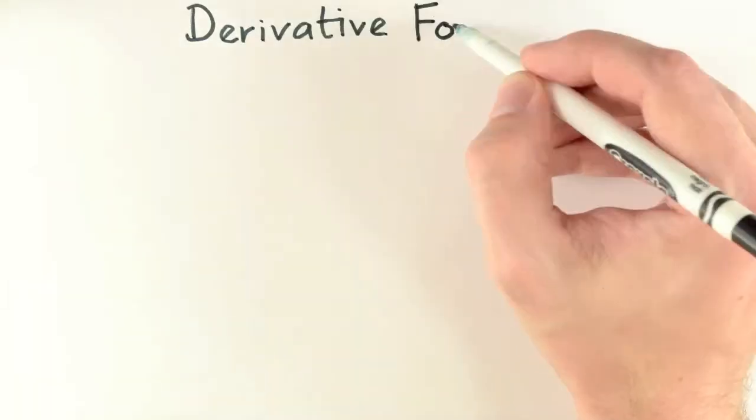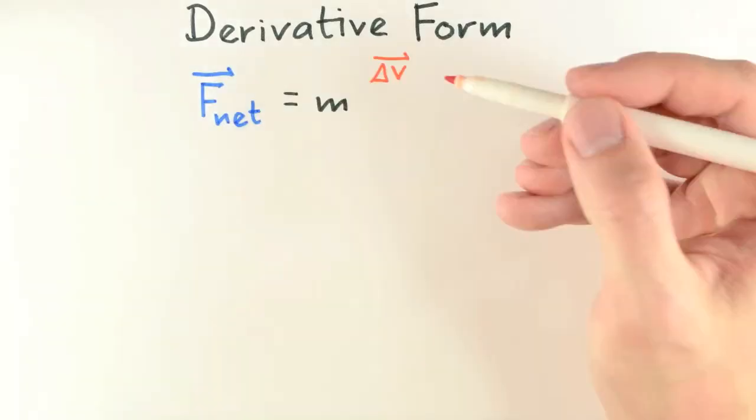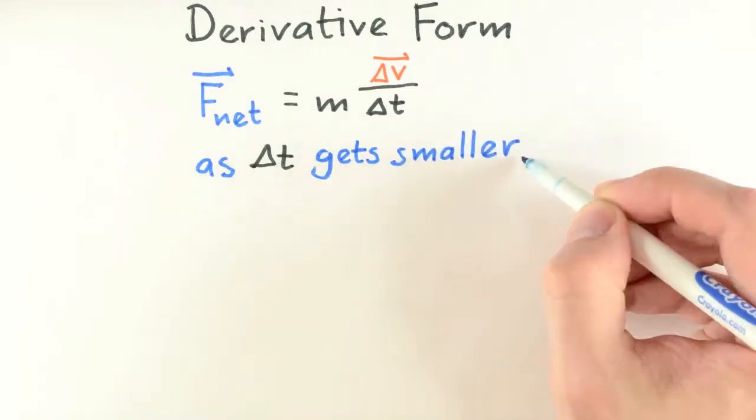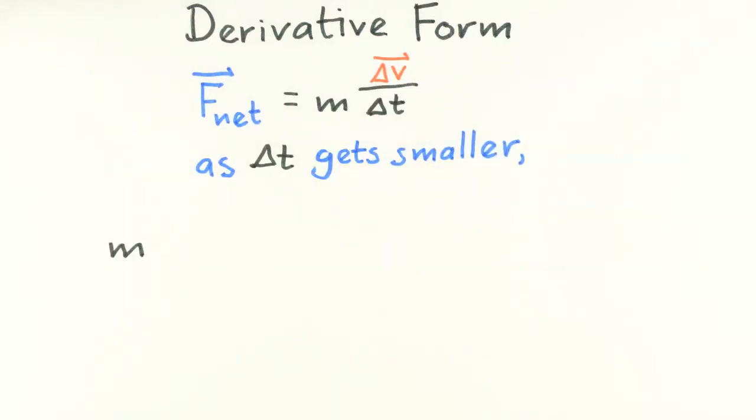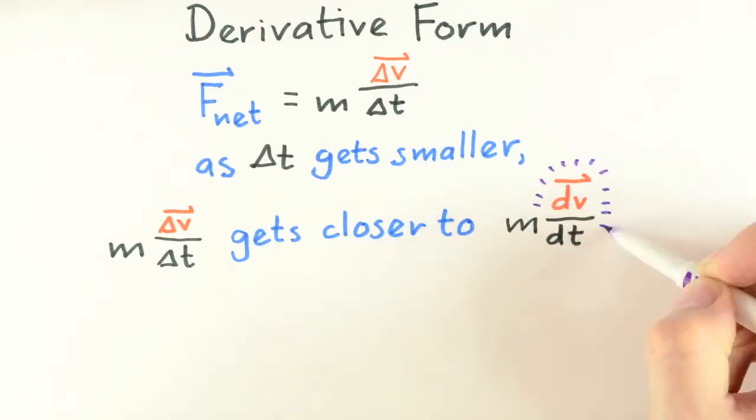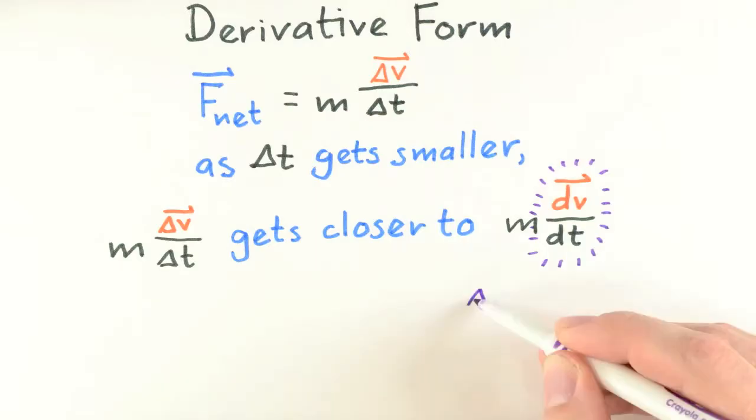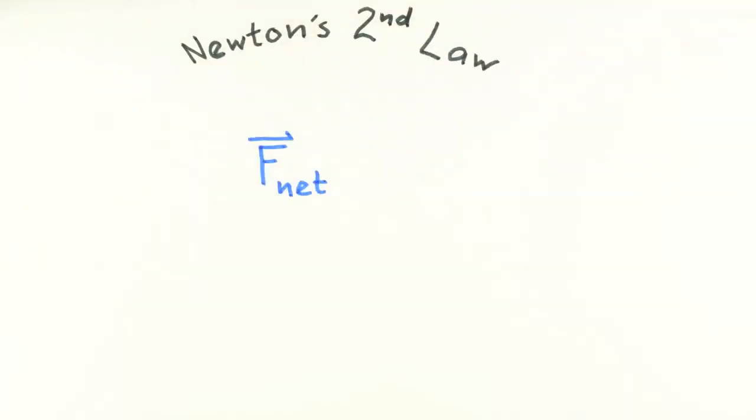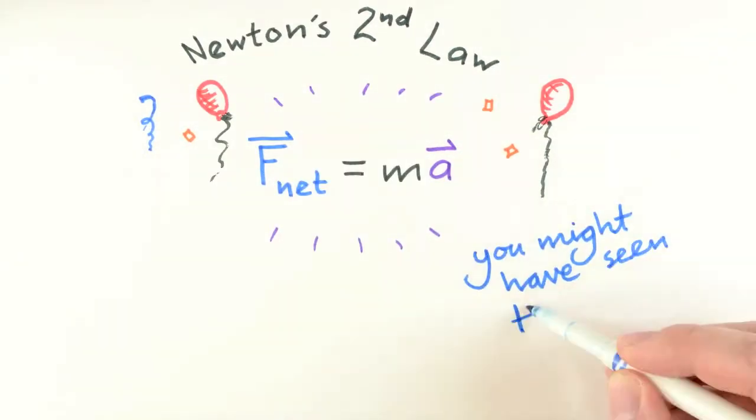Let's mention here that this form for Newton's second law is called the derivative form, because as delta t becomes sufficiently small, the ratio delta v over delta t becomes a good approximation to the derivative of the velocity with respect to time. Moreover, this derivative is often called the acceleration, a. So the derivative form for Newton's second law written in this way with the acceleration is how Newton's second law is most popularly known.